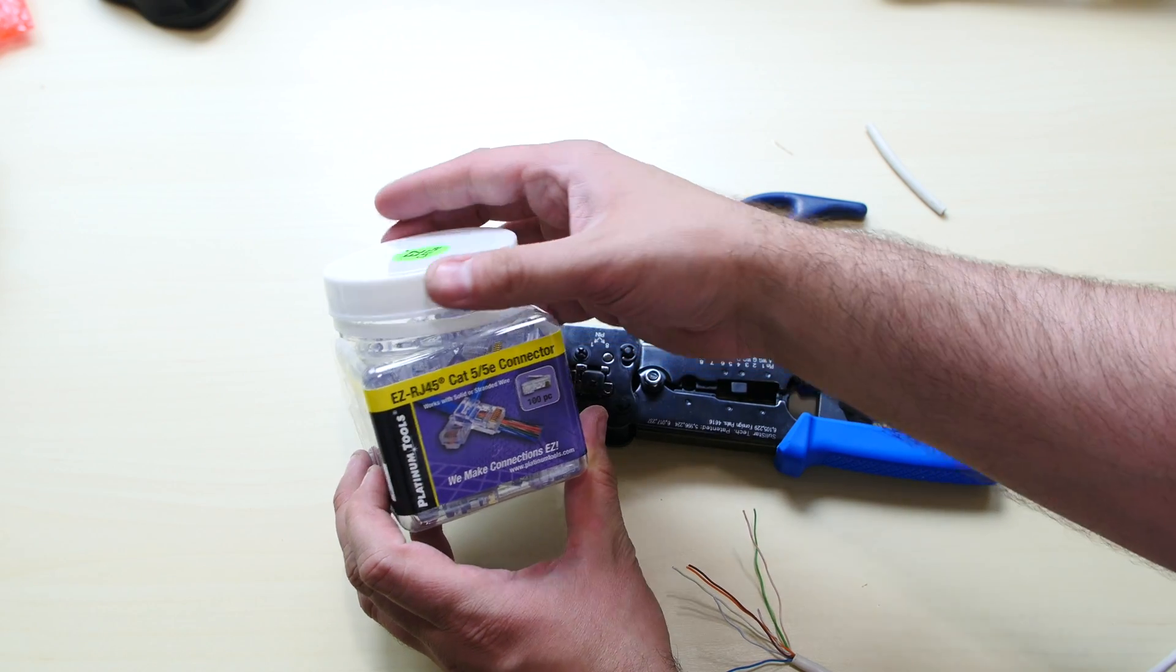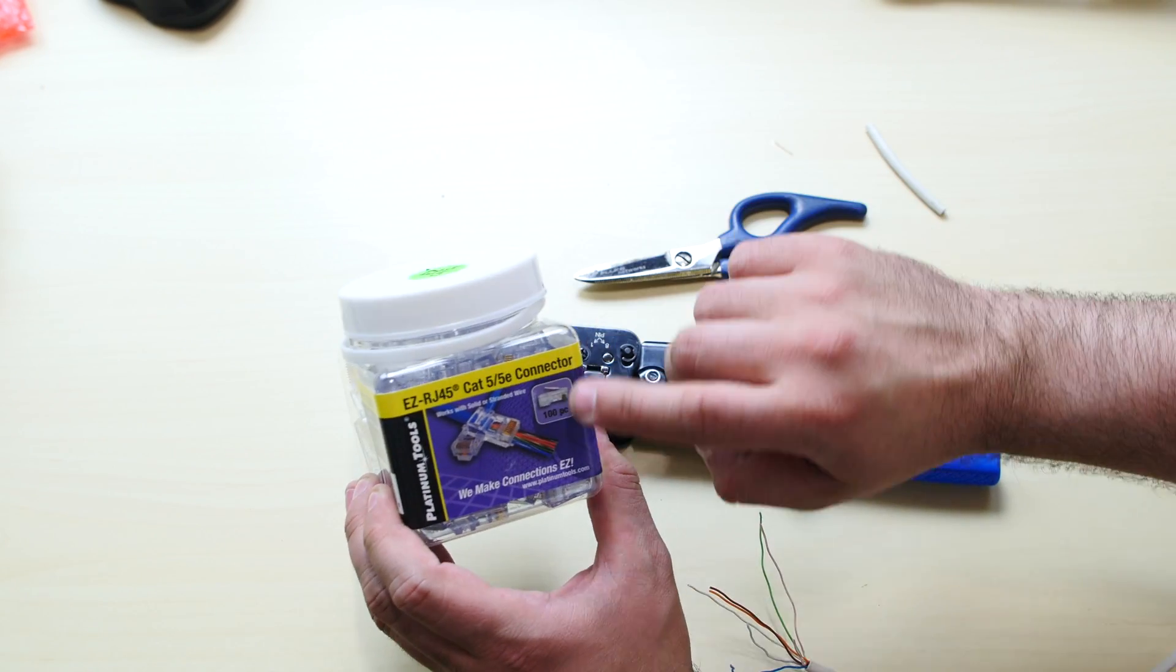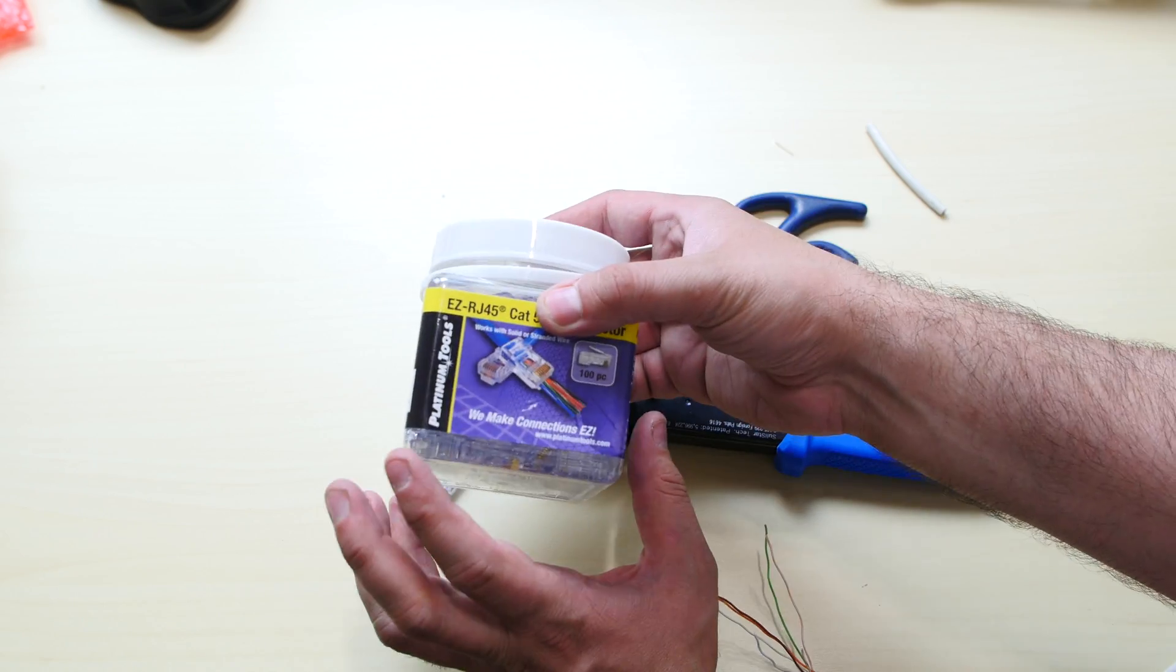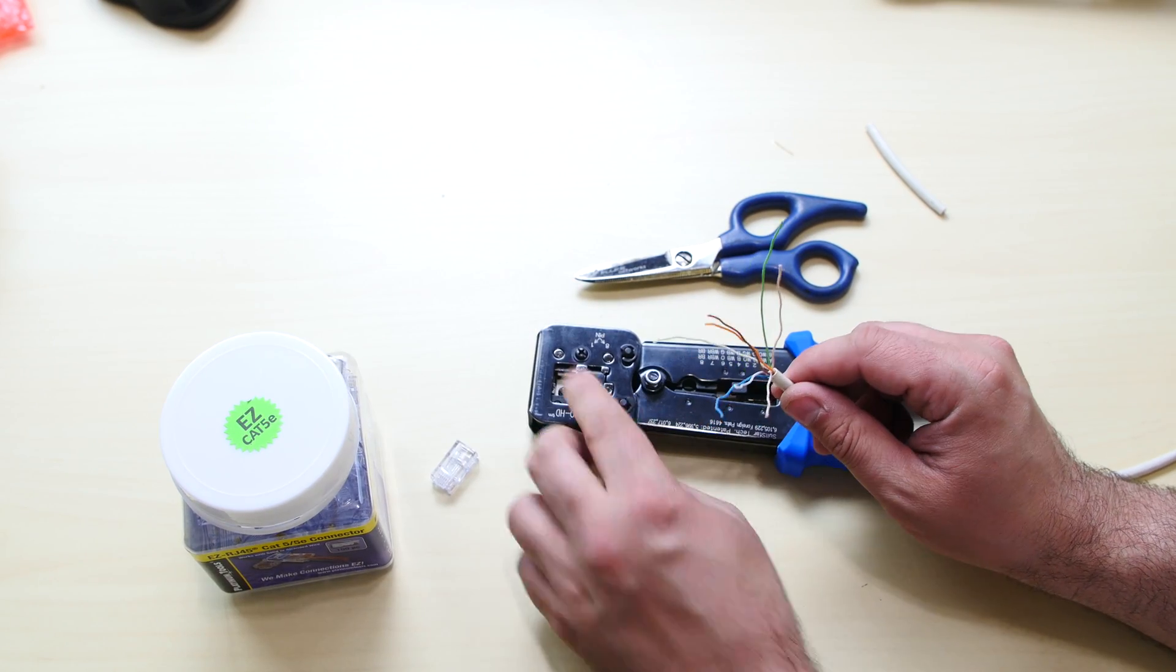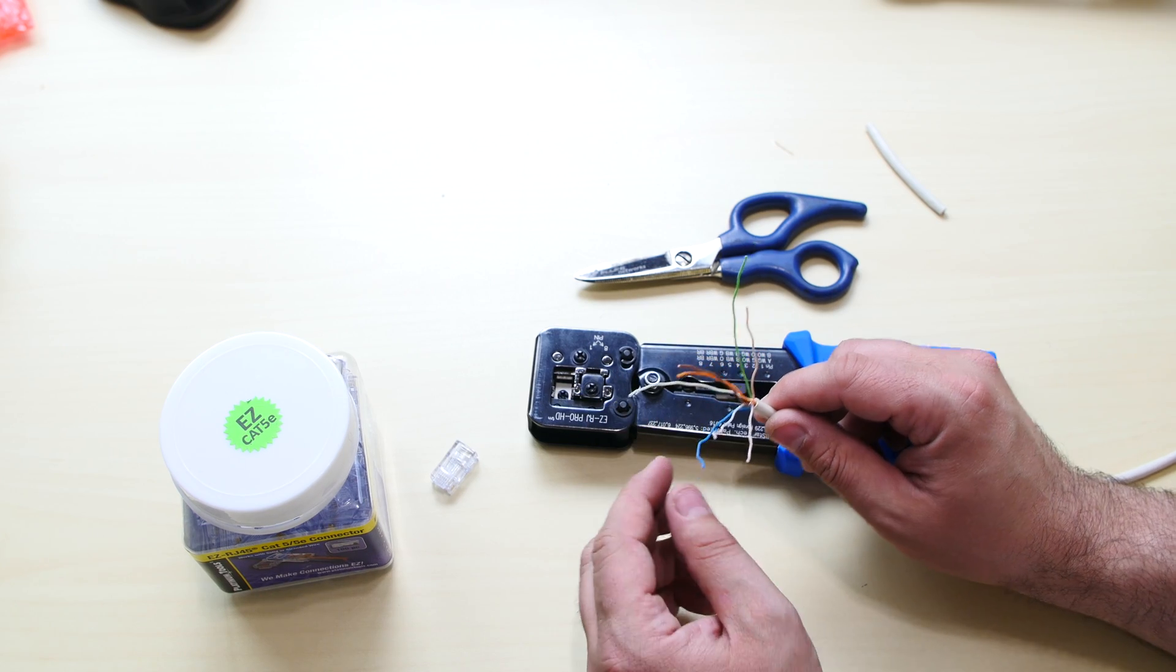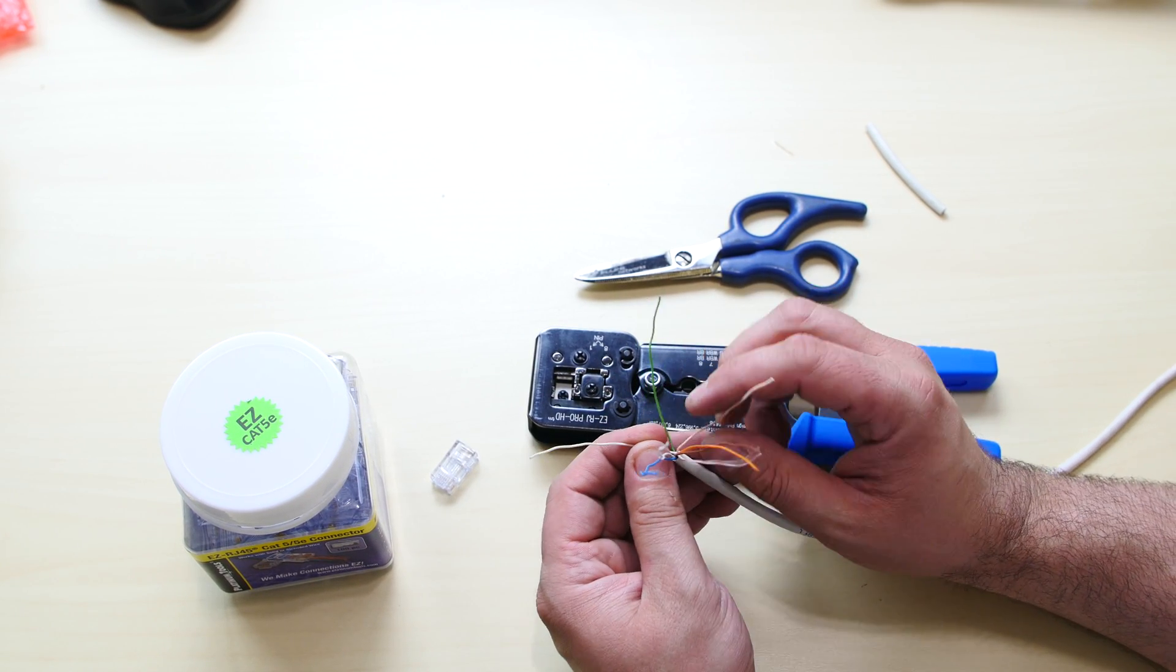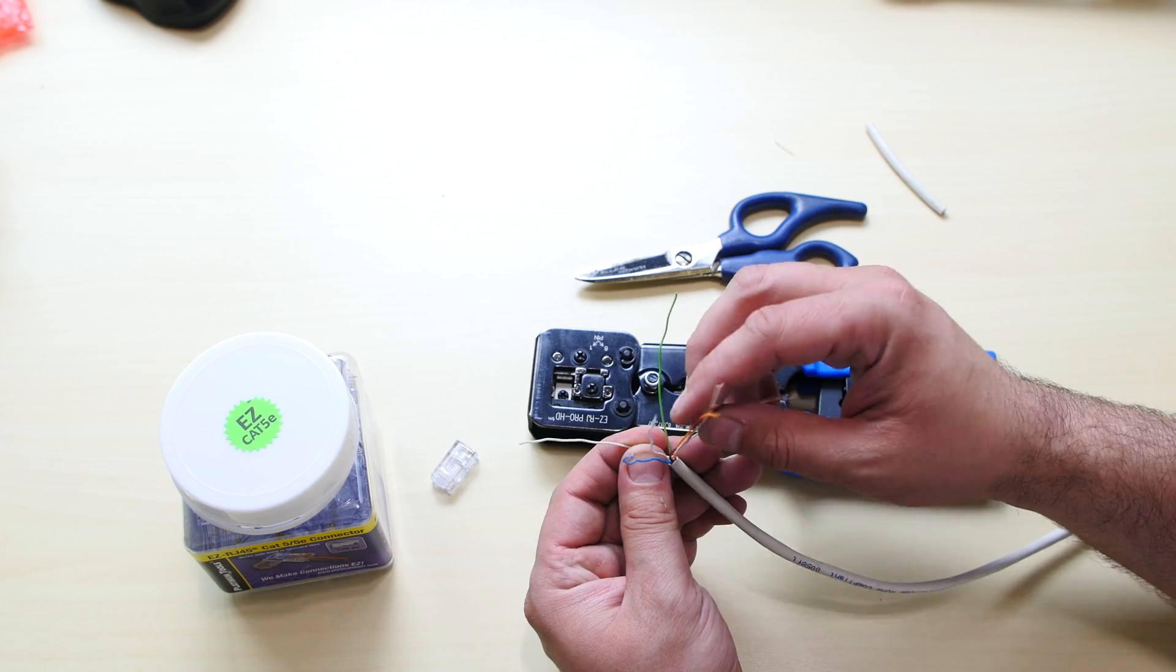I'm going to take out one of these connectors. We're going to use it. And this comes from the same company, by the way, Platinum. This is the EZ RJ45 connectors, really strong connectors, really high quality. And this one I have in my hand comes with a hundred pieces. So I'll leave a link to this in the description. You leave it any length.